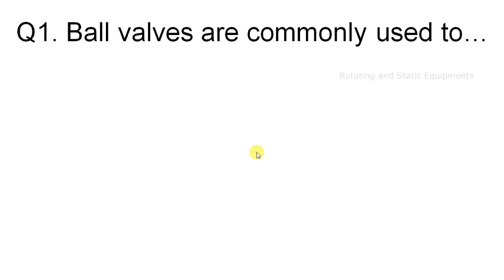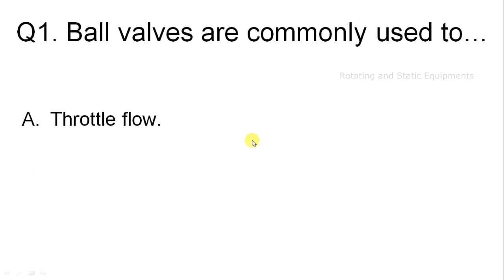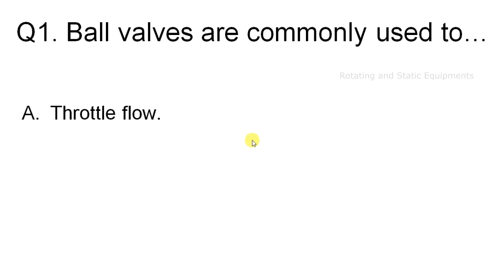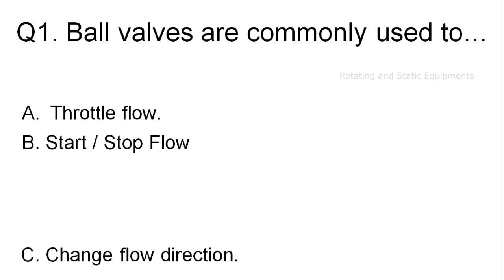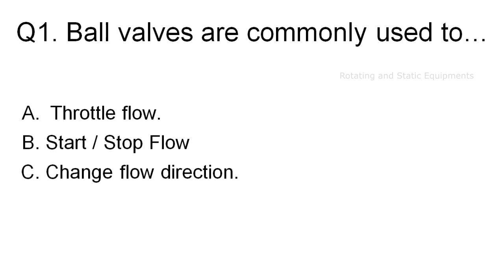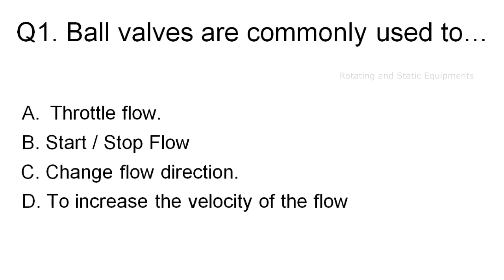Question 1: Ball valves are commonly used to — Option A: throttle flow. Option B: start and stop flow. Option C: change flow direction. Option D: to increase the velocity of the flow.